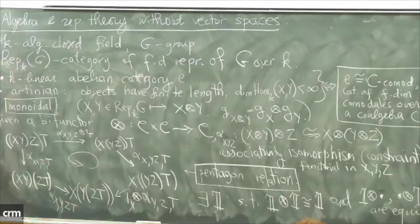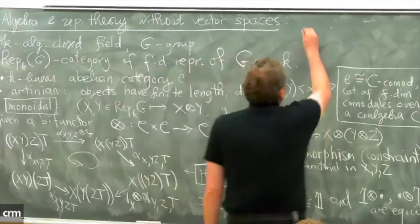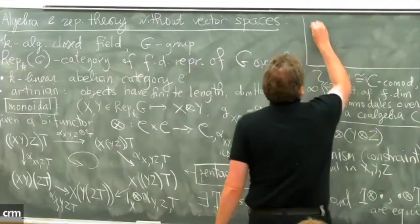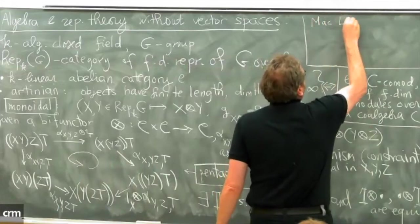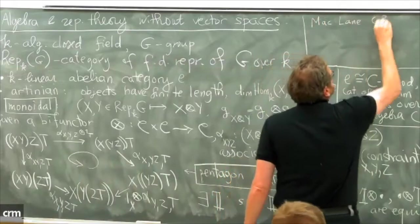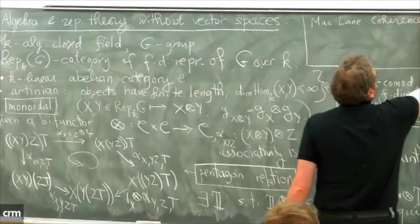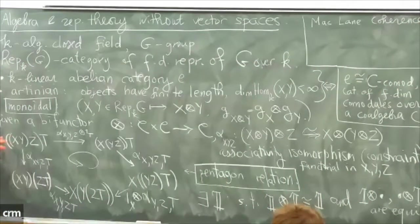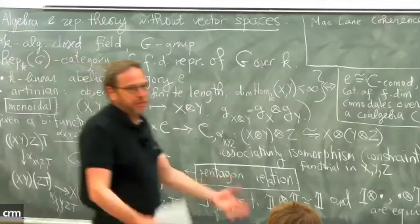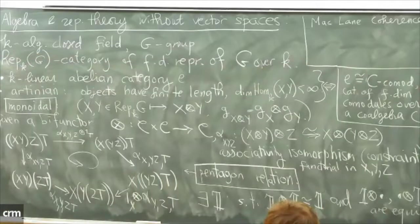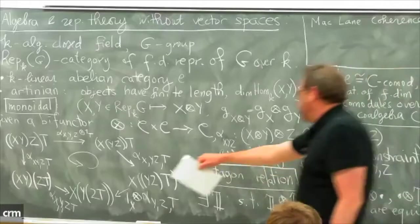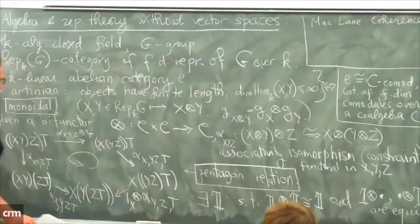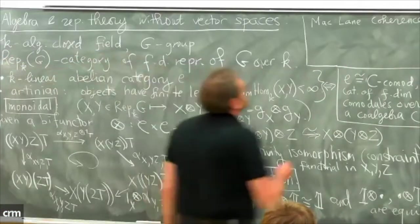This is what it means for a category to be monoidal. In a monoidal category there is the so-called MacLane coherence theorem, which says that it doesn't matter how you put parentheses. This pentagon condition for four objects is enough — once it is satisfied you don't have to worry about the position of parentheses for five, six, or any number of objects.